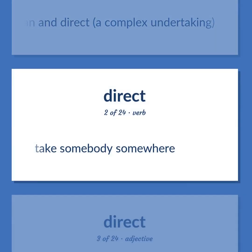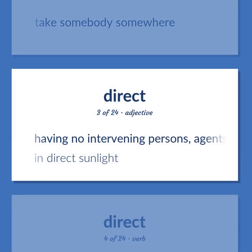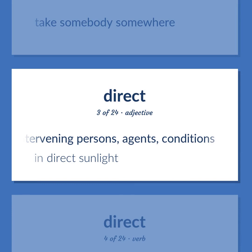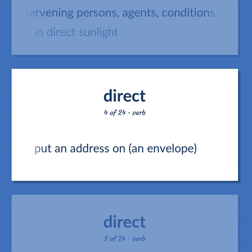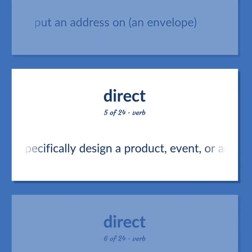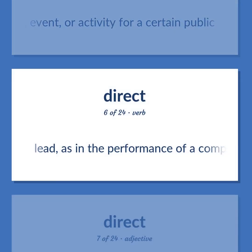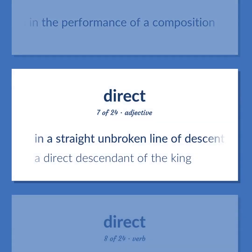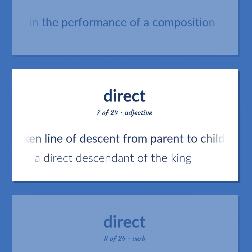Take somebody somewhere. Having no intervening persons, agents, or conditions. Indirect sunlight. Put an address on an envelope. Specifically design a product, event, or activity for a certain public. Lead, as in the performance of a composition. In a straight unbroken line of descent from parent to child. A direct descendant of the king. Cause to go somewhere. He directed all his energies into his dissertation.